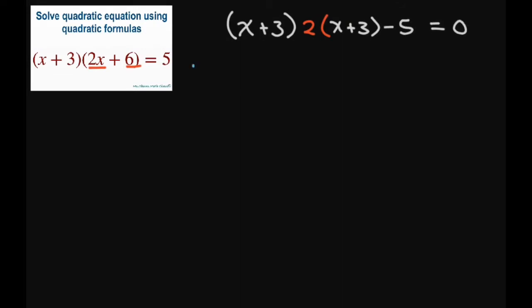And then I'm going to let A equal x plus 3. If you do this method, I want to show you both methods, so substituting we get A times 2 times A minus 5 equals 0.